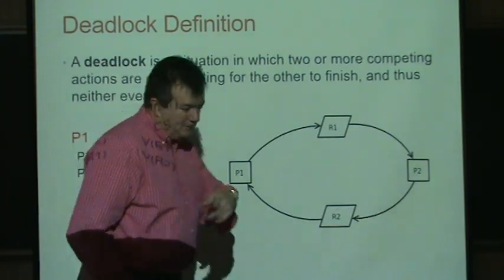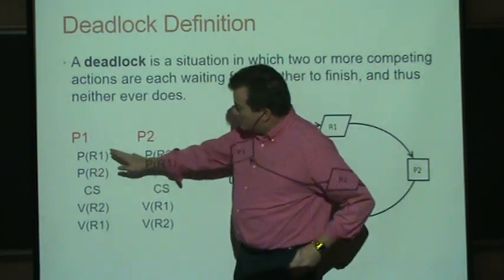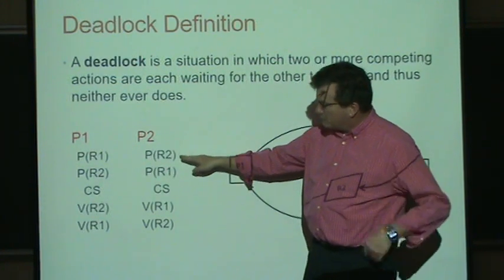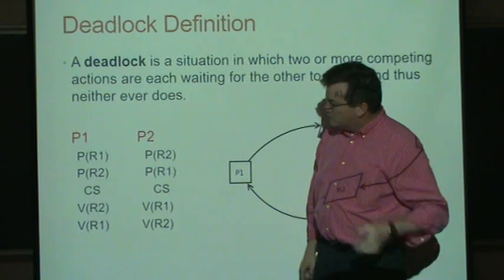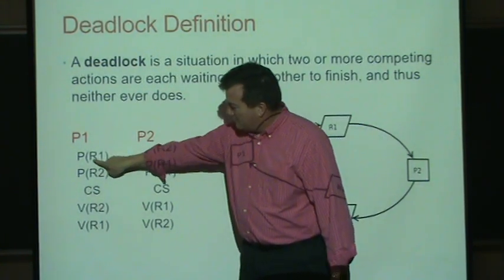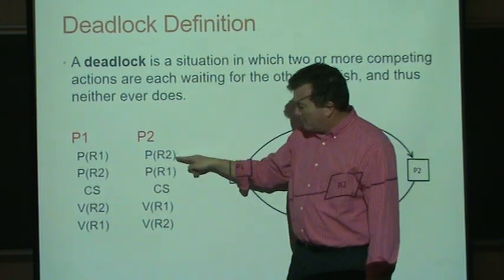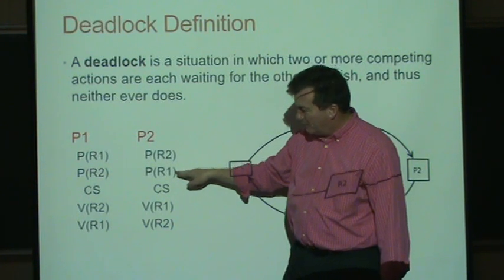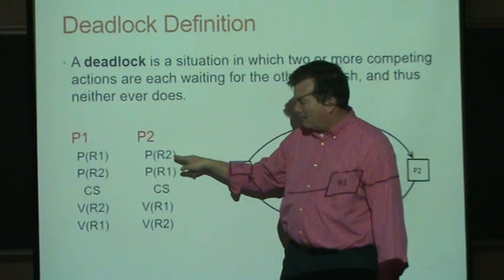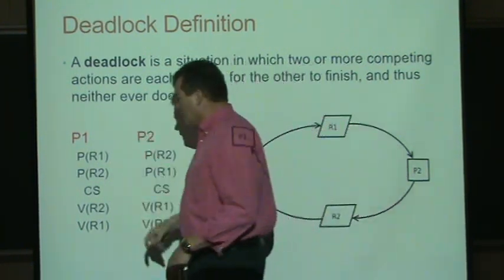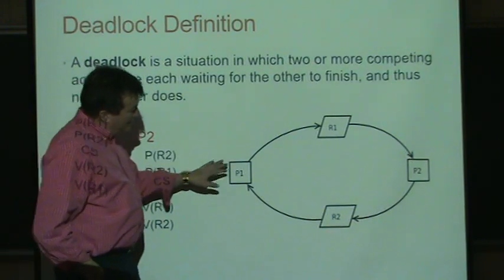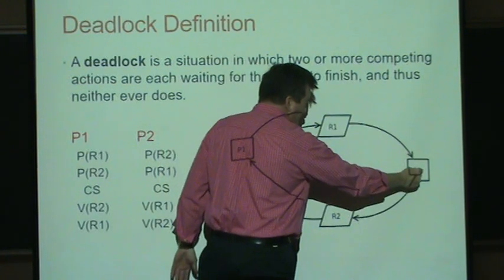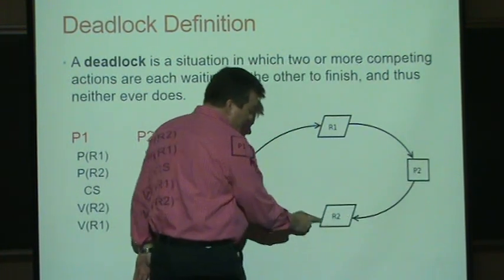Last class we gave an example of how a deadlock happens. One program asks for resource one, then resource two. Another program asks for resource two, then resource one. If the first process gets resource one and is taken off the processor, the second gets resource two and asks for resource one — it can't get it. We go back to the first, which asks for resource two, can't get it. These two processes are deadlocked forever. We can represent that as a graph: process one has resource one, resource one is being asked for by process two, process two has resource two, which is being asked for by process one.